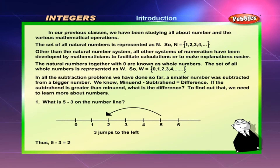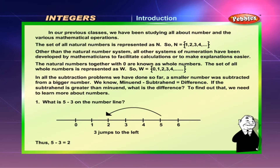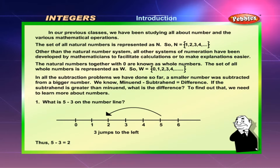Integers — Introduction. In our previous classes, we have been studying all about numbers and the various mathematical operations. The set of all natural numbers is represented as N, so N is equal to 1, 2, 3, 4 and so on. Other than the natural number system, all other systems of numeration have been developed by mathematicians to facilitate calculations or to make explanations easier.